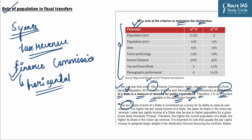The per capita income of a state is considered a proxy for its ability to raise its own revenue. The higher the per capita income of a state, the lower is its share in Union tax revenue. Lower per capita income may be due to higher population for a given GDP. Therefore, the higher the current population of a state, the higher is its share. It is also important to note that per capita income is usually assigned a larger weight in the distribution formula for northern states.